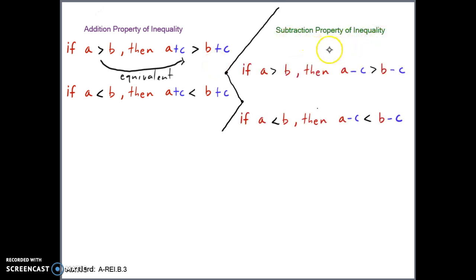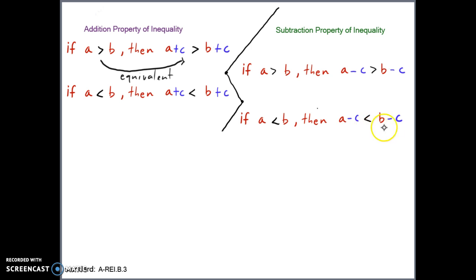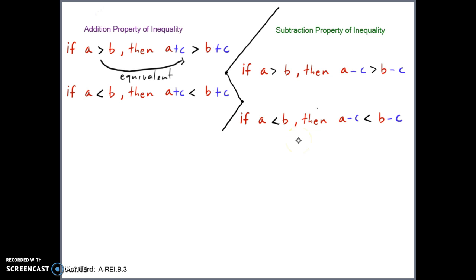The subtraction property of inequality — no change here either. If A is greater than B, we can subtract C from both sides. We can subtract any number we want from both expressions in the inequality, whether it uses a greater than or less than symbol. So no change between these two properties.